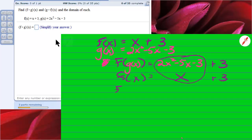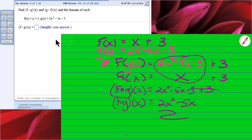So now, our f of g of x is going to be 2x squared minus 5x minus 3 plus 3. Well, minus 3 plus 3 is 0. And so, our f of g of x is going to be 2x squared minus 5x.